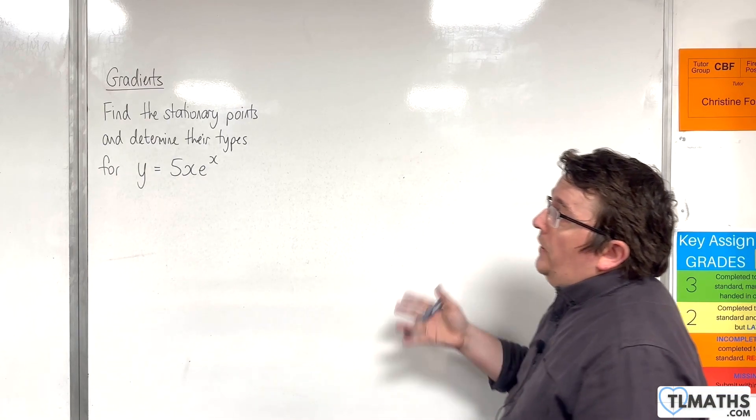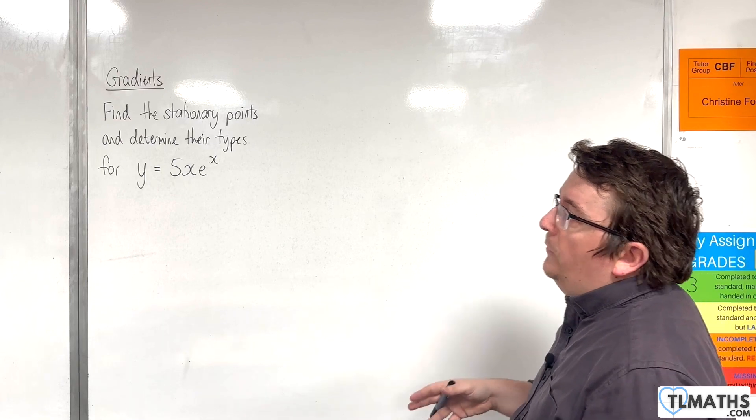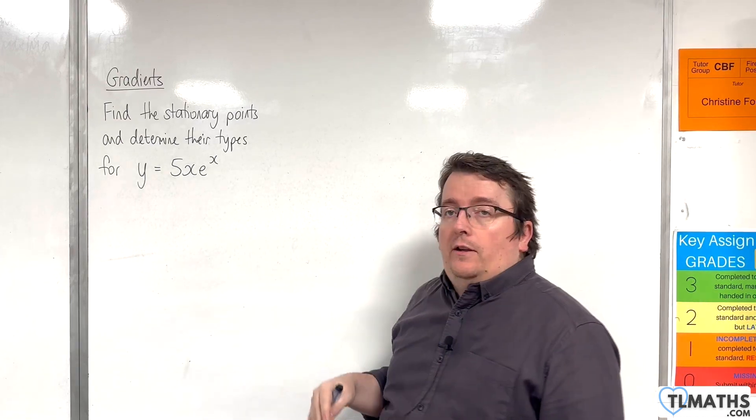In this video, we want to find the stationary points and determine their types for y equals 5x e to the x.